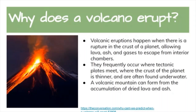Volcanic eruptions happen when there is a rupture in the crust of a planet, allowing lava, ash, and gases to escape from interior chambers. They frequently occur where tectonic plates meet, where the crust is thinner, and are often found underwater. A volcanic mountain can form from the accumulation of dried lava and ash over time. Famous volcanoes include Mount St. Helens, which erupted in 1980, and Mount Vesuvius, which in 79 AD destroyed the city of Pompeii and other Roman cities.